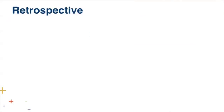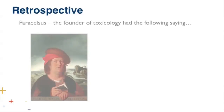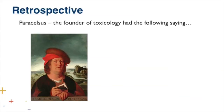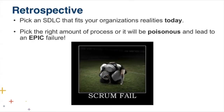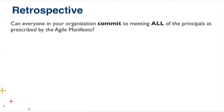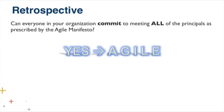A quick retrospective: I want to talk about Paracelsus, the founder of toxicology, who has a famous saying: 'the dose makes the poison.' If he mixes chemicals in a certain way, he can cure someone; mix them a little differently and he can kill someone. If you take this analogy and bring it to process deployment — if you don't pick the process that fits your organization's realities today, you're setting up a poisonous environment that will lead to an epic failure. It all boils down to one question: can everyone in your organization commit to meeting all of the principles prescribed by the agile manifesto? If yes, do agile. If no, do IID.